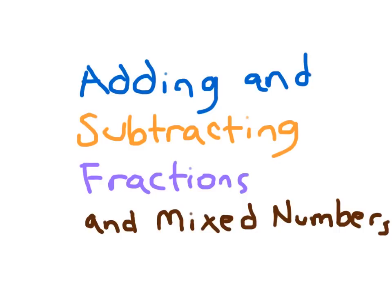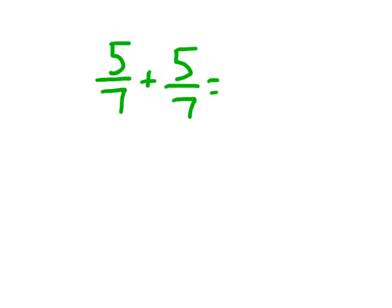Let's work on adding and subtracting fractions and mixed numbers with like denominators. When we're adding five-sevenths plus five-sevenths, we make sure the denominator stays the same, and we just add the numerators.